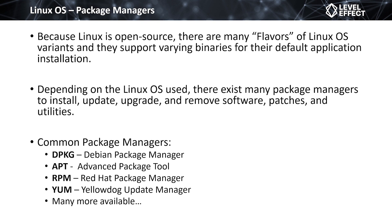Depending on the version of Linux you're using, it will come with a different package manager, determined by who created that flavor and also by the file system and installation file types required. Common package managers include dpkg and apt (Advanced Package Tool) for Debian-based systems like Ubuntu and Kali Linux, the Red Hat Package Manager (RPM), and yum, which is used on CentOS — the open-source version of Red Hat Linux.